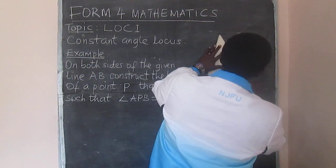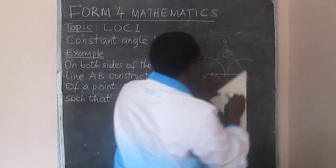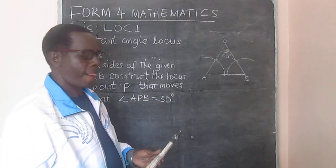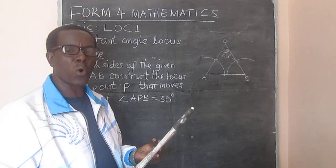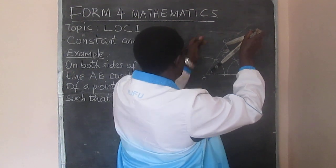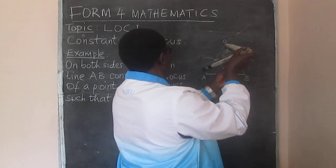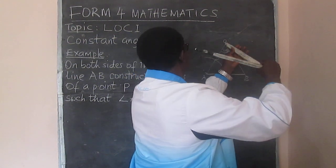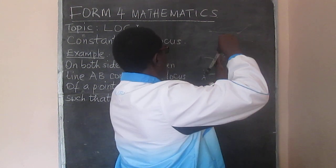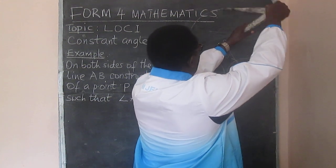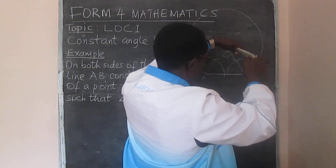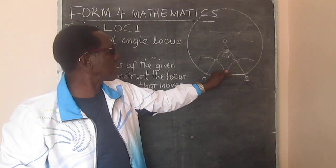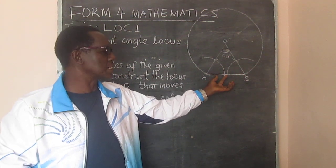I'd like to extend this line a little so that I can see the center clearly. Now I'm ready to construct the circle with radius OA. Remember that this is now our center. We need to be accurate. So we now have the locus on this side. We cannot simply come to the other side without treating AB as the chord from that side as well.